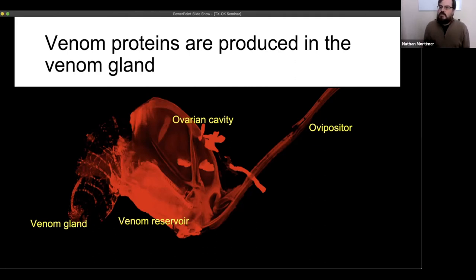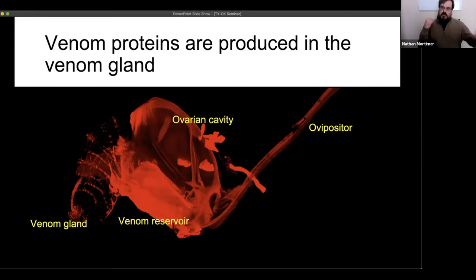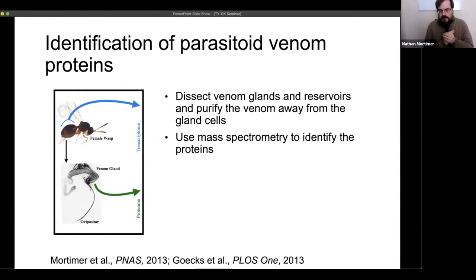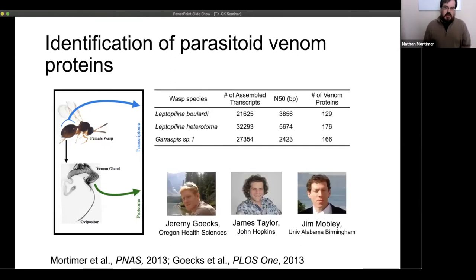We study these venom proteins by dissecting out the apparatus and opening the venom reservoir — the venoms leak out, we separate them by centrifuging away from the cells, and we have purified venom for experiments. To figure out what proteins were in the venom, we used mass spectrometry with collaborators at the University of Alabama. We've also sequenced the genomes and transcriptomes of three wasp species, which gives us the number of transcripts and venom proteins identified for each species.